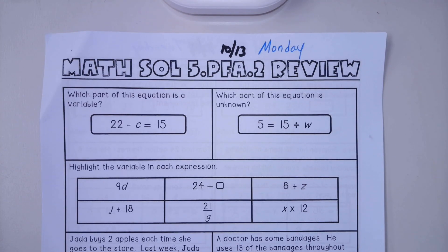Good afternoon. This is the homework for Monday, October 13th. Let's start at the beginning. We are continuing to work on variables, unknowns in an expression or equation.